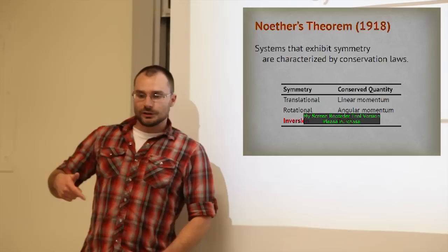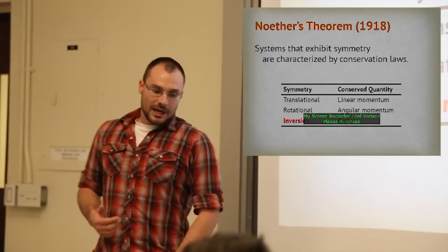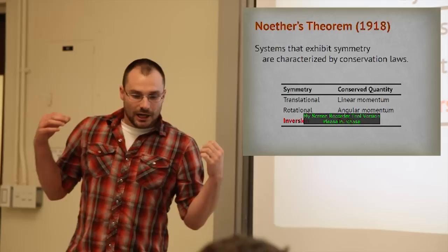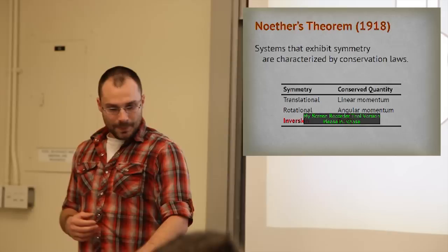Similarly, we have rotational symmetry, which means a system whose energy — or Lagrangian — doesn't depend on angle, and in that case you get conservation of angular momentum. What we're going to talk about today is systems that are asymmetric under spatial inversion. The conserved quantity associated with systems that are symmetric under inversion is parity.